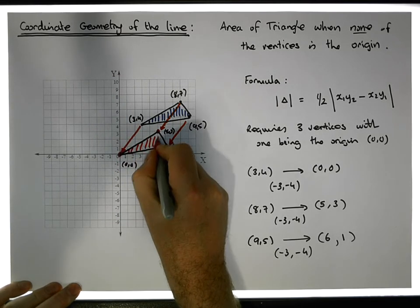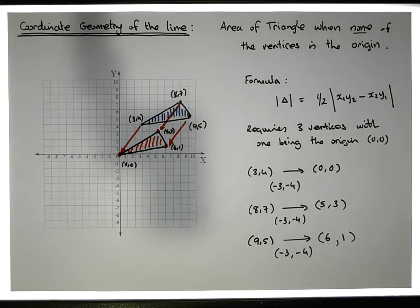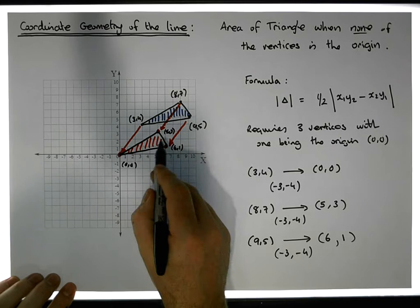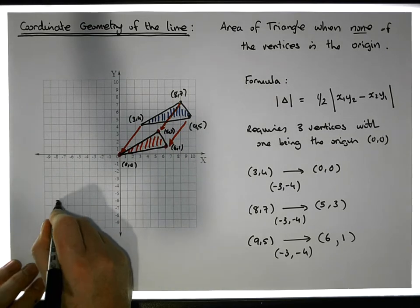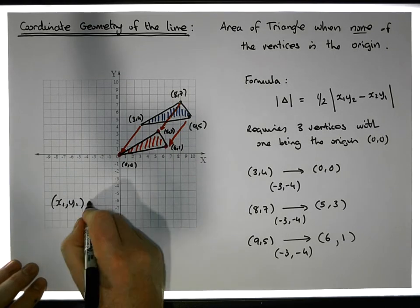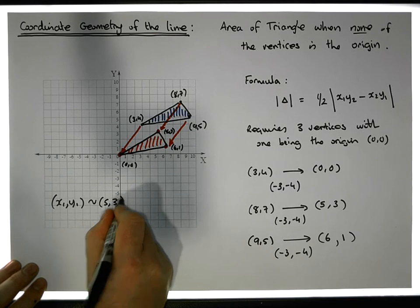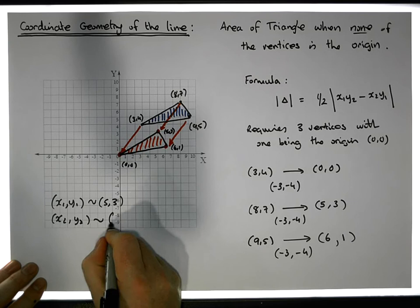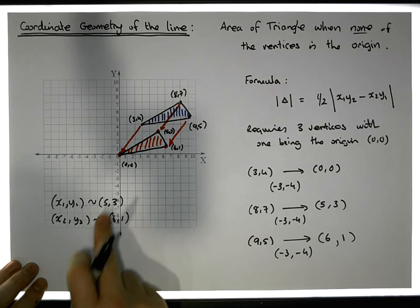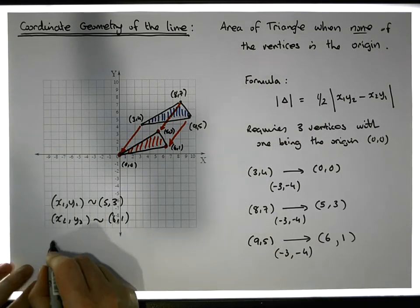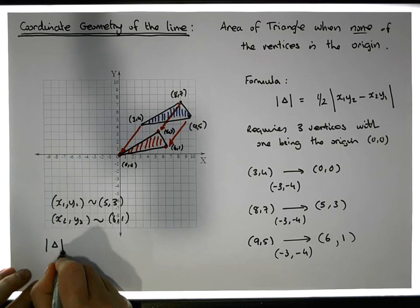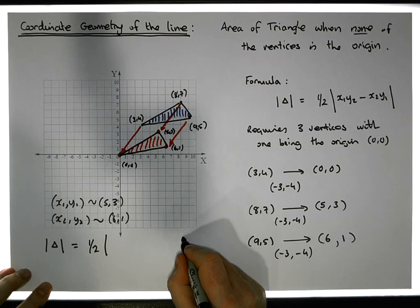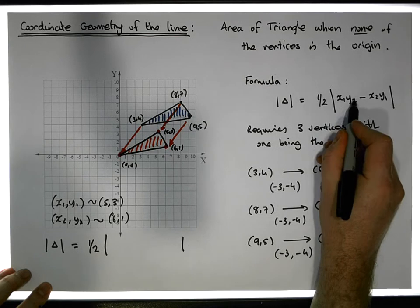So now we have a triangle that's positioned with one of its vertices on the origin. So what we need to do now is calculate the area of this particular triangle, the red one. Now we can use the formula. x1,y1 and x2,y2 are going to be our two points. So let's say x1,y1 is the first point 5,3, and let's say x2,y2 is the second point 6,1.